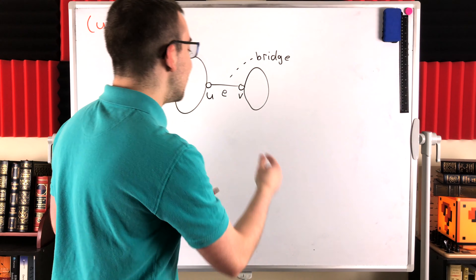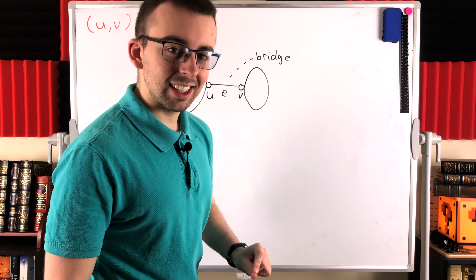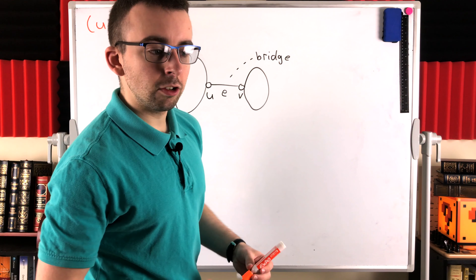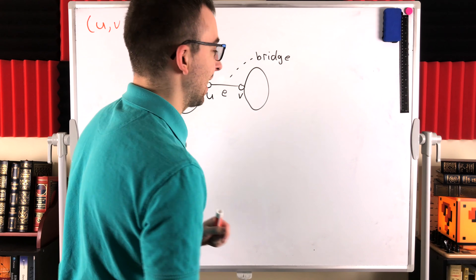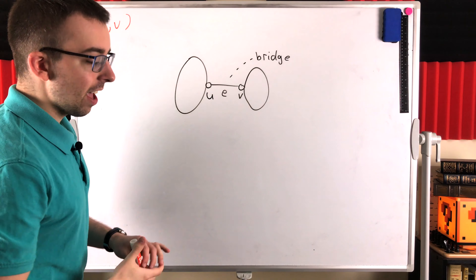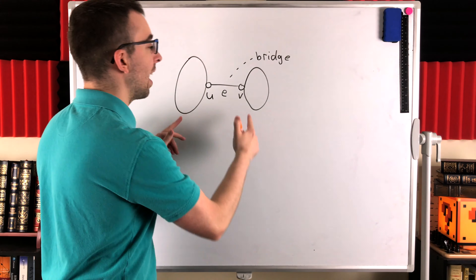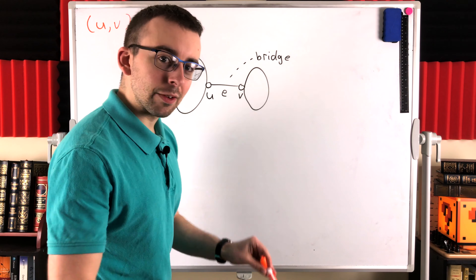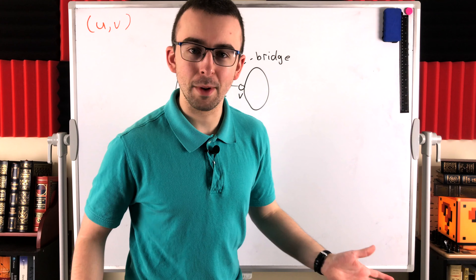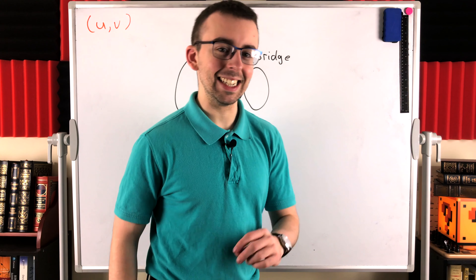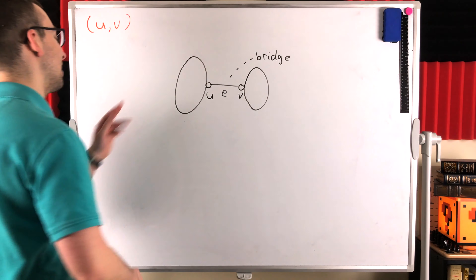What's useful about this result is that it tells us that if we delete the bridge, then its end vertices in particular will be disconnected in the resulting graph. We know that deleting a bridge disconnects the graph, but this tells us specifically that the end vertices of the bridge will be disconnected, because the bridge was the unique path connecting those vertices. We'll use this result in a later lesson to prove that deleting a bridge from a graph produces exactly two components — a big difference from cut vertices, where deleting a cut vertex could produce a huge number of components.